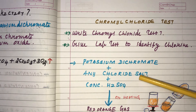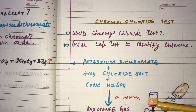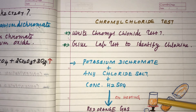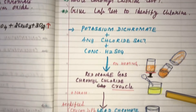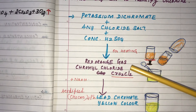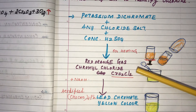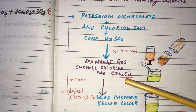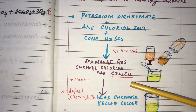On heating this mixture, it gives red-orange vapours. The evolving red-orange vapours are actually Chromyl Chloride, with the formula CrO₂Cl₂.